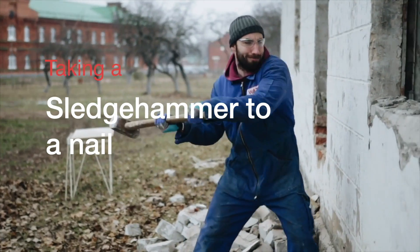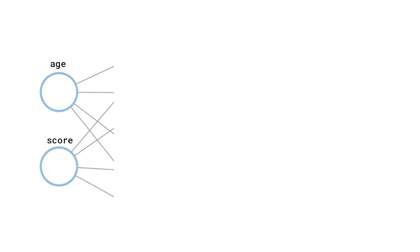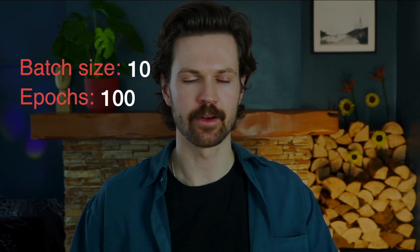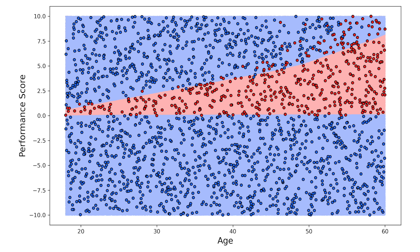It can only construct a decision boundary that is a linear function of the features you give it. Instead of trying to fix the regression model, let's take a more forceful approach. Using the same train-evaluation split, we build a neural network with two hidden layers of 20 and 15 nodes respectively. Both hidden layers have ReLU activation functions and the output layer has a sigmoid activation function. To train the model, we use a batch size of 10 and 100 epochs. The model achieved an accuracy of 96% on the evaluation set. Looking at the model's decision boundary, we can see why it is considered a non-linear classification algorithm — even though we only gave the model age and performance, it was still able to construct a non-linear decision boundary, doing the hard work for us. Yet this requires no critical thinking on our part.